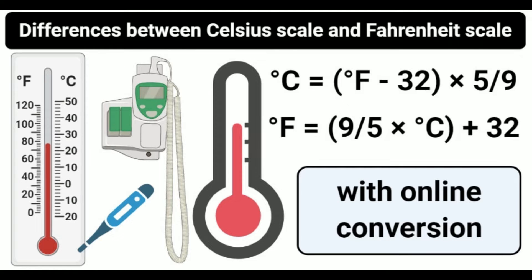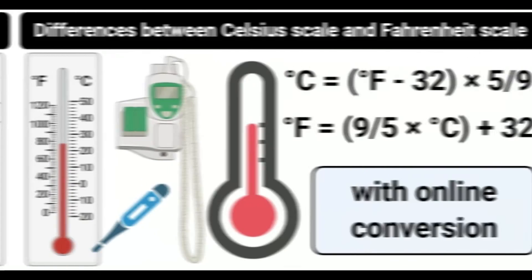However, a modern Celsius scale has been adopted that is based on the triple point of Vienna Standard Mean Ocean Water and has improved with the concept of absolute zero. According to this, the modern concept of the Celsius scale is not based on the freezing point and boiling point of water, but on the triple point of water.